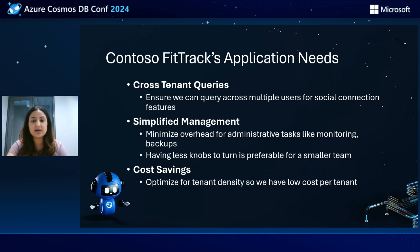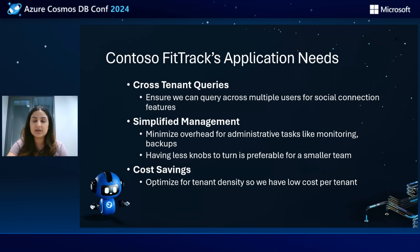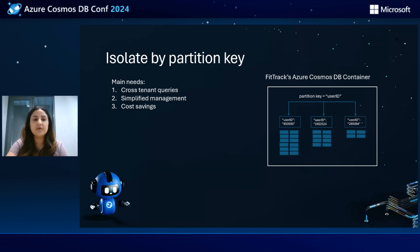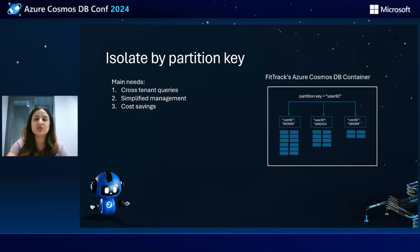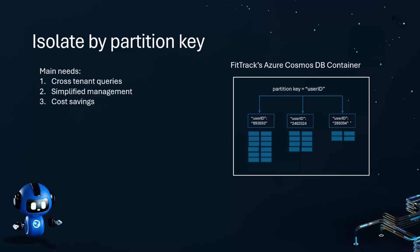We also want to optimize cost by having higher tenant density and lower cost per tenant. Cost is important because we are a small business — having fewer resources while still achieving granular control over our users is most ideal. For this scenario, we'd like to isolate by partition key. We'll be able to do cross-tenant queries and we'll be bounded by one container, which simplifies management as we can control throughput, monitoring, and settings for all tenants at the same time. This is the most cost-effective solution, as we just have one container for all our tenants.